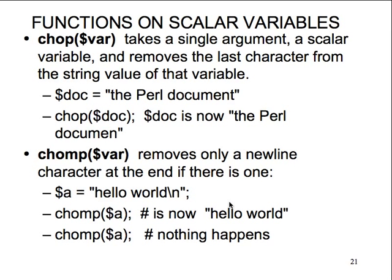Here are some functions. The 'chop' function takes a single scalar variable argument and removes the last character from the string value. For example, 'the pearl document' - chop doc - removes the 't' from the end. 'Chomp' only removes a newline character at the end if there is one; if there's no newline, it doesn't return an error.